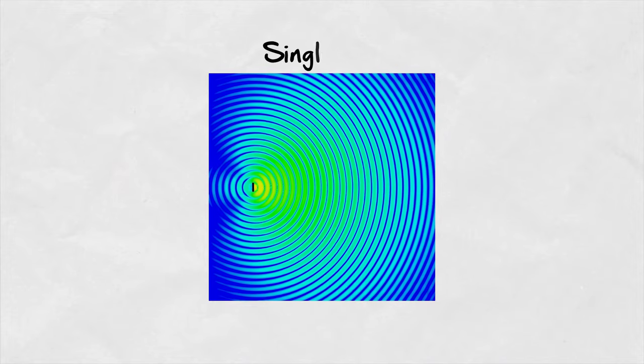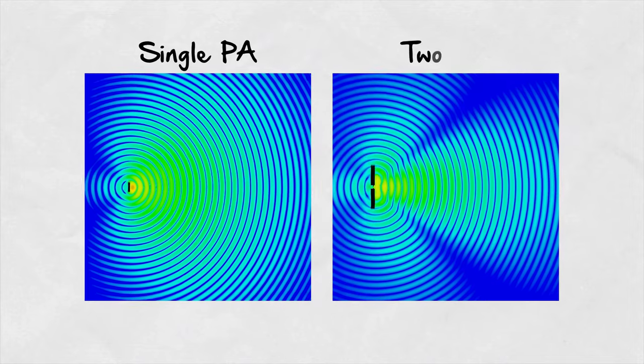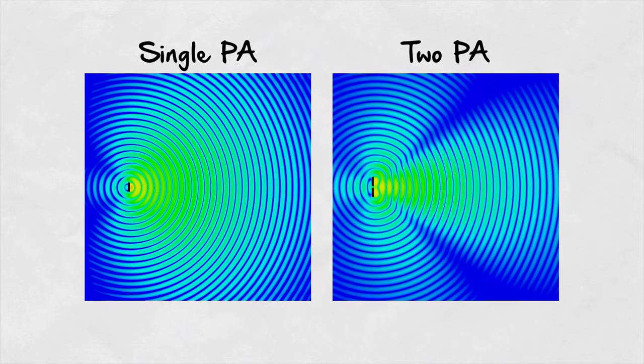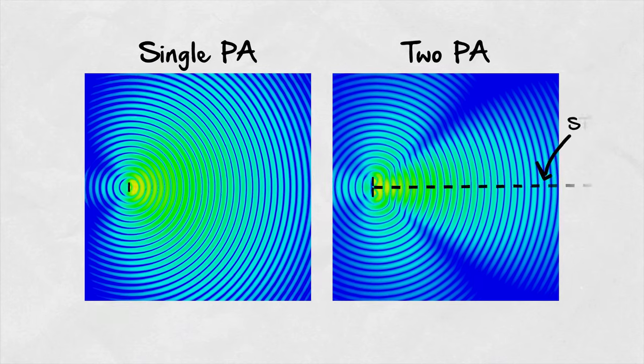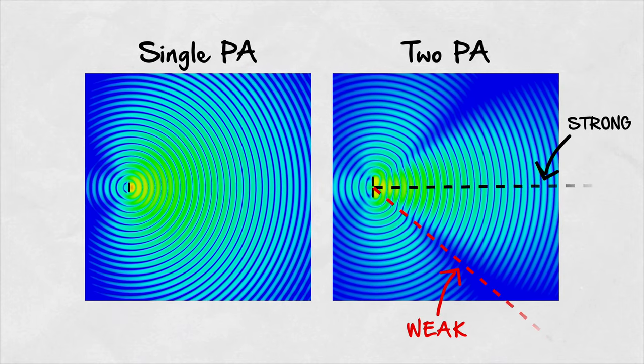How does it work? This is how the electromagnetic fields of a single patch antenna look like. Looking at the fields of an array of two patch antennas, there is a clear difference. They are directions where the fields are strong and in other directions they are weak.